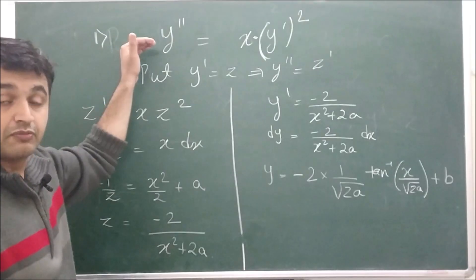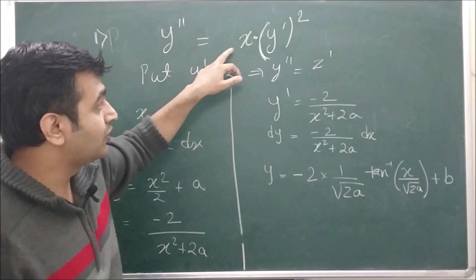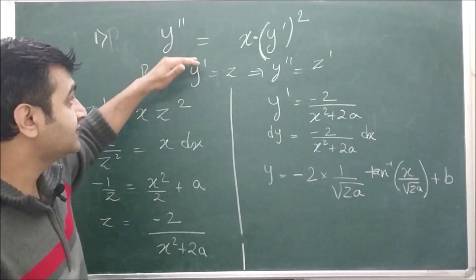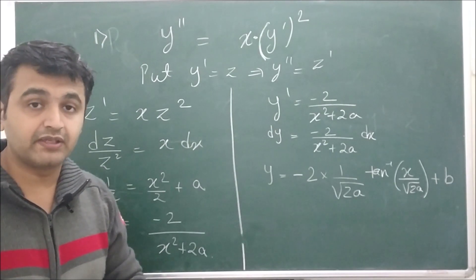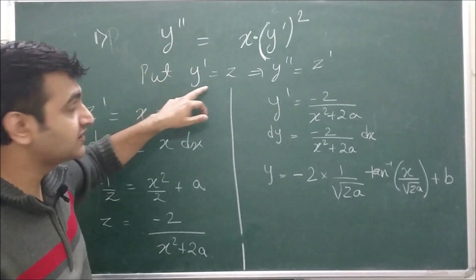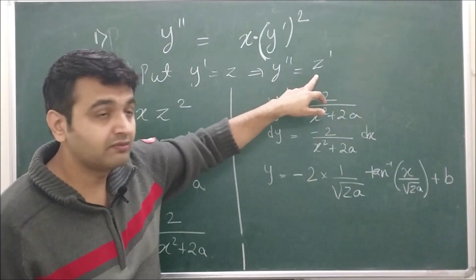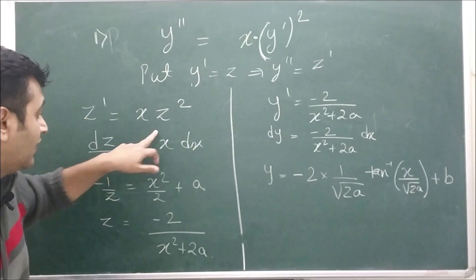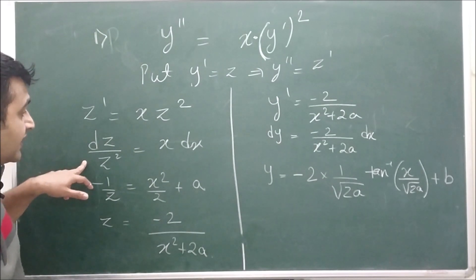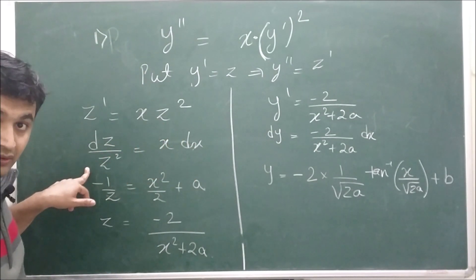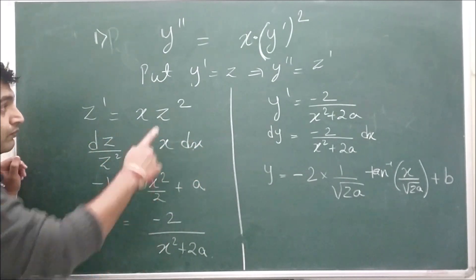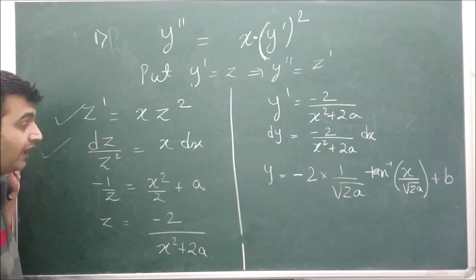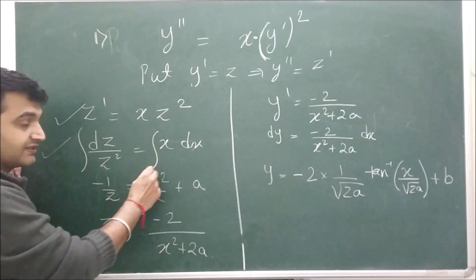Let's see both methods one by one. Take the example y double prime equal to x times y prime squared. This is second order and non-linear, and it does not involve y explicitly. So we put y prime equal to z, which makes y double prime equal to z prime. Substituting gives z prime equal to x times z squared. Writing z prime as dz over dx, we get dz over z squared equal to x dx — this is variable separable.